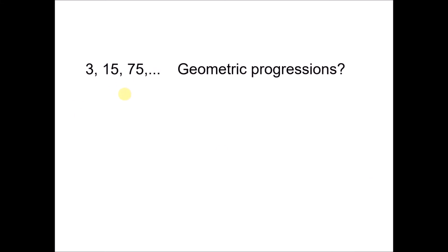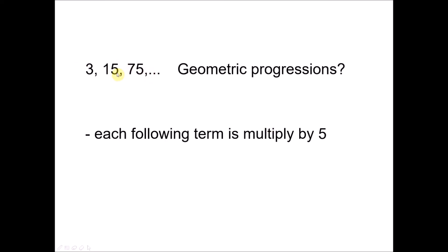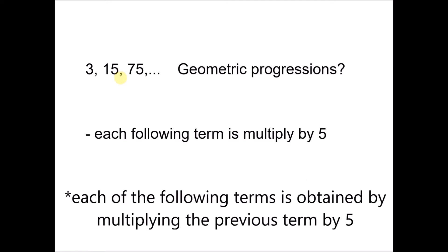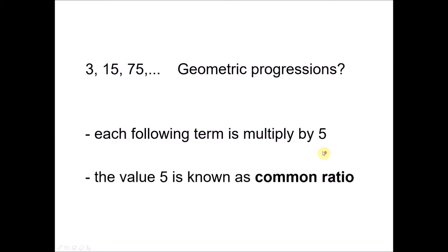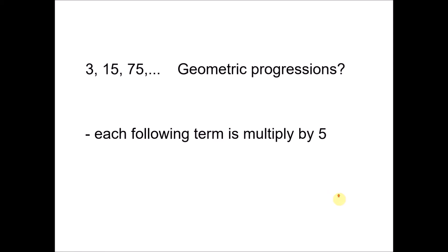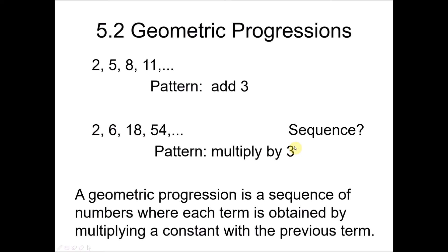The definition: a geometric progression is a sequence of numbers where each term is obtained by multiplying a constant. The constant in this case is 3, with the previous term. So now we try to identify this given series — is it a geometric progression? We look at 3 and 15: multiply 3 by 5 to get 15, multiply 15 by 5 to get 75. Each following term is multiplied by 5, hence this is a geometric progression. This value 5 is named the common ratio.